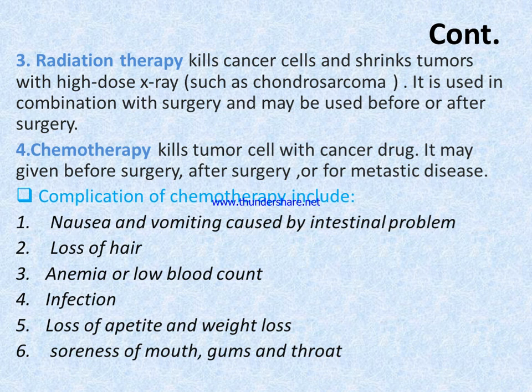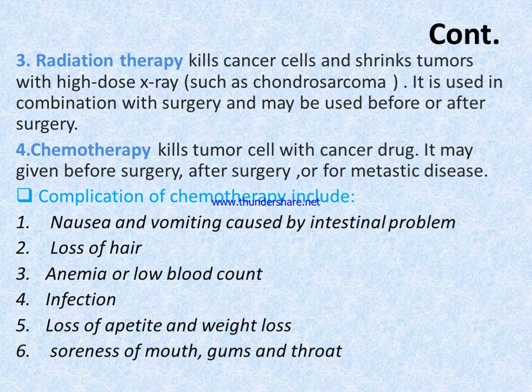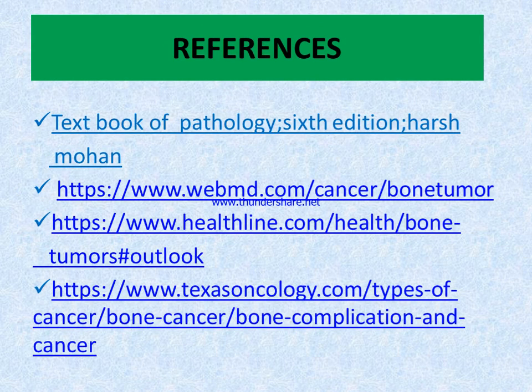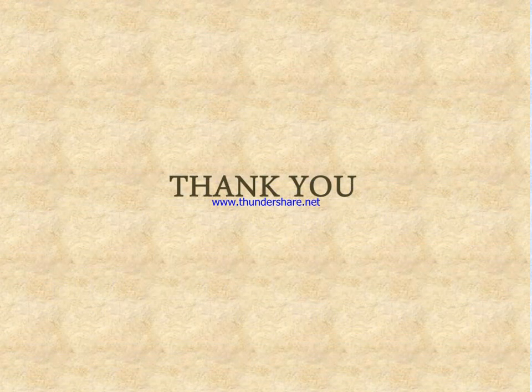Chemotherapy kills tumor cells with cancer drugs. Complications of chemotherapy include nausea and vomiting from intestinal problems, hair loss, anemia or low blood count, infection, loss of appetite, weight loss, and soreness of mouth, gums, and throat. Other complications of bone tumors include bone loss, bone pain, hypercalcemia, osteomyelitis, and metastasis. Thank you — please like, comment, and subscribe to the channel.